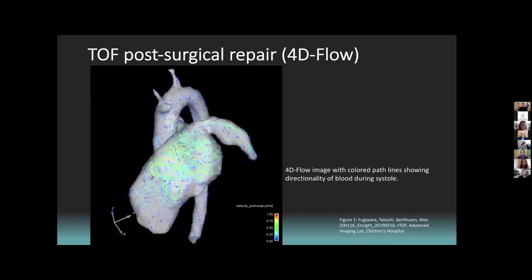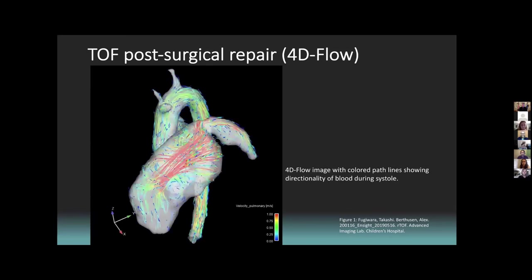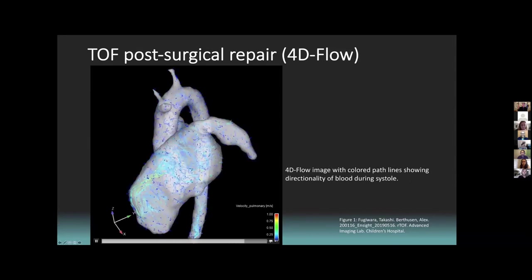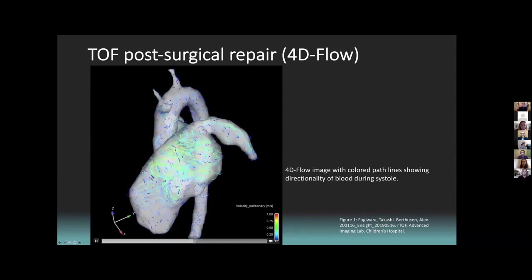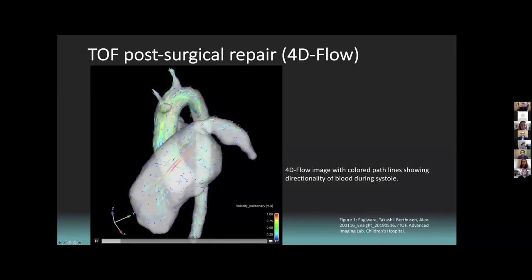This is something cool we were able to do in the lab here at Children's. This is a 4D flow image of a repaired Tetralogy of Fallot patient. As we see here, we have a lot of tortuous flow, and it's not going straight out of the pulmonary trunk. Along this pulmonary regurgitation is jetting back into the right ventricle, along with an enlarged pulmonary trunk, which could be a chance for aneurysm there.